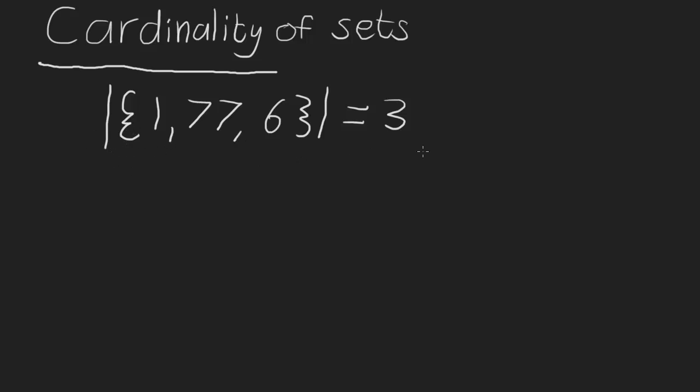So this equation right here says the cardinality of the set containing 1, 77, and 6 is equal to 3.